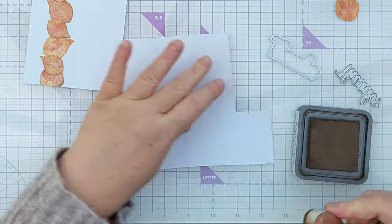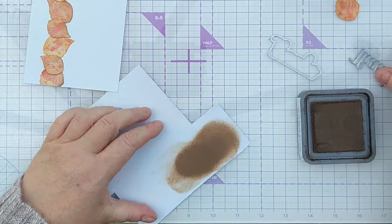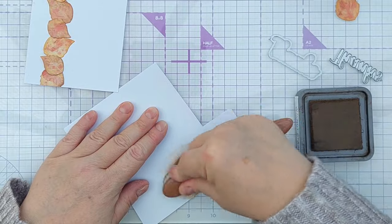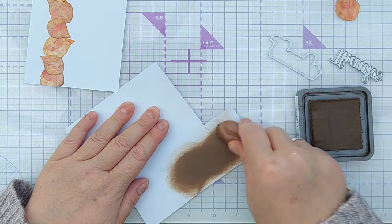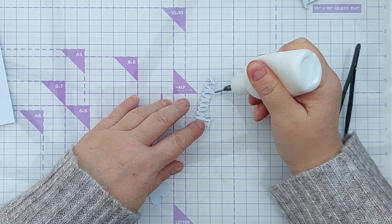For my sentiment, I wanted to die cut my word out of some dark brown card, so I used walnut stain, which is a really rich deep warm brown. I blended that onto some smooth white card and then die cut out the thanks. I also die cut the shadow from smooth white card.